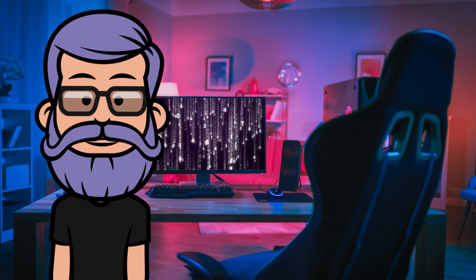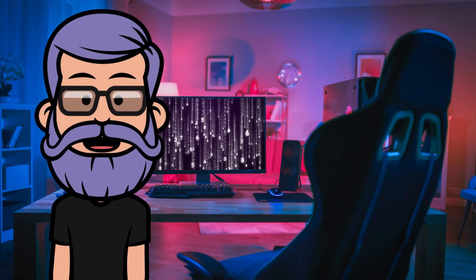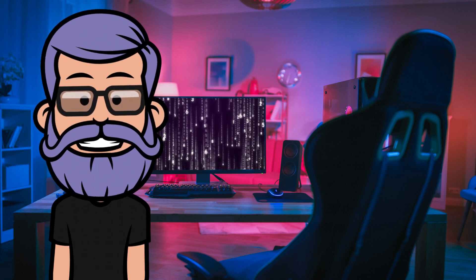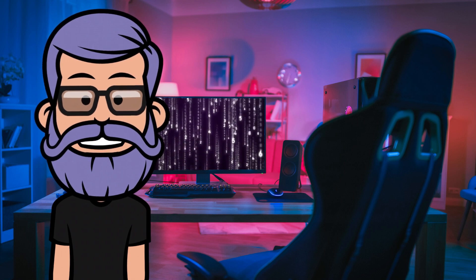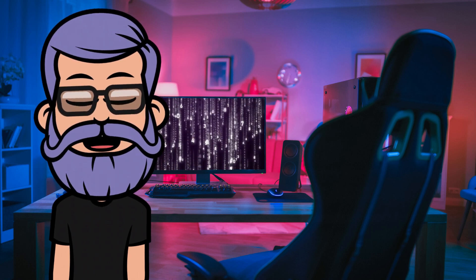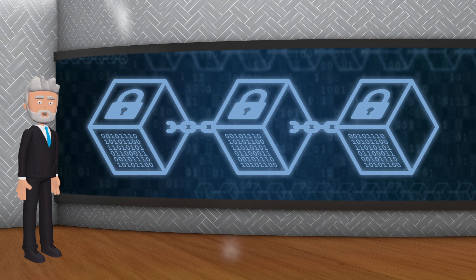En résumé, ces fonctions de hachage sont comme des mécanismes de sécurité pour les blockchains et elles rendent les choses plus difficiles pour les pirates. Les fonctions de hachage jouent un rôle crucial dans la garantie de l'intégrité des données et la résistance aux attaques. Elles permettent également de lier les blocs entre eux, formant ainsi la chaîne qui constitue la blockchain.